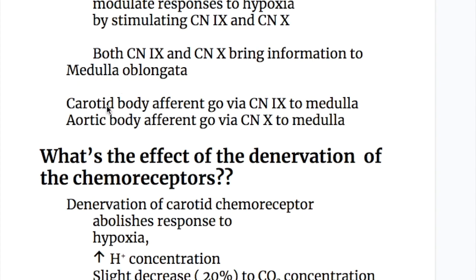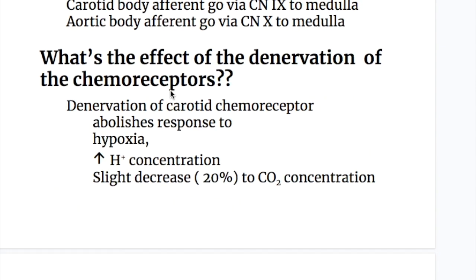Carotid body afferents travel via cranial nerve 9, the glossopharyngeal nerve, to the medulla, whereas aortic body afferents travel via the vagus nerve to the medulla.